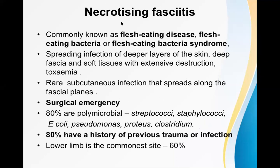Gram-positive, gram-negative, cocci, bacilli — very important knowledge to revise. Eighty percent of cases have a history of previous trauma or infection, known as a predisposing factor. Necrotizing fasciitis can occur without any predisposing factor in around 20 percent of cases, but in the majority there is a prior lesion or wound. The lower limb is the commonest site, in about 60 percent of cases — around the thigh, leg, or sometimes the perineal area.